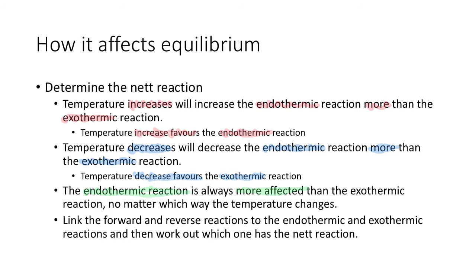You have to really think about it — you can't just say it increases, therefore it's favored. You have to think about which one increased more, which one decreased more. Once you've worked out which one is going to go faster than the other, you can link it to the forward and reverse rates of reaction by identifying whether the forward or reverse rate of reaction is endo or exothermic — that was covered in the last video.